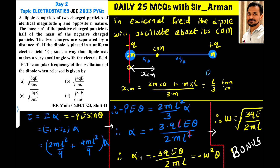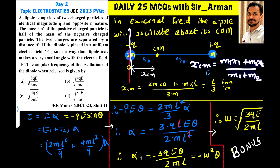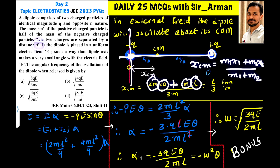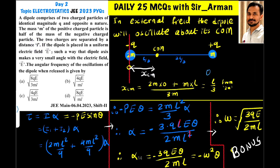The dipole oscillates about its center of mass. To find the center of mass, we use: x_cm = (m₁x₁ + m₂x₂) / (m₁ + m₂). Placing the negative charge (mass 2m) at the origin, its contribution is 2m × 0 = 0. The positive charge (mass m) is at distance l, so we get x_cm = (m × l) / (m + 2m) = l/3. The center of mass is at l/3 from the negative charge.